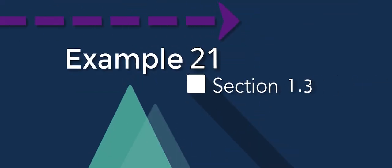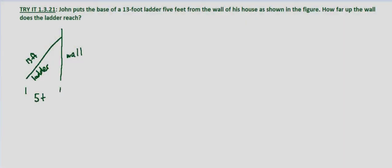In this problem, we're told that John puts the base of a 13-foot ladder five feet from the wall of his house as shown in the figure. I've redrawn the figure here from a side view. We're asked how far up the wall does the ladder reach.